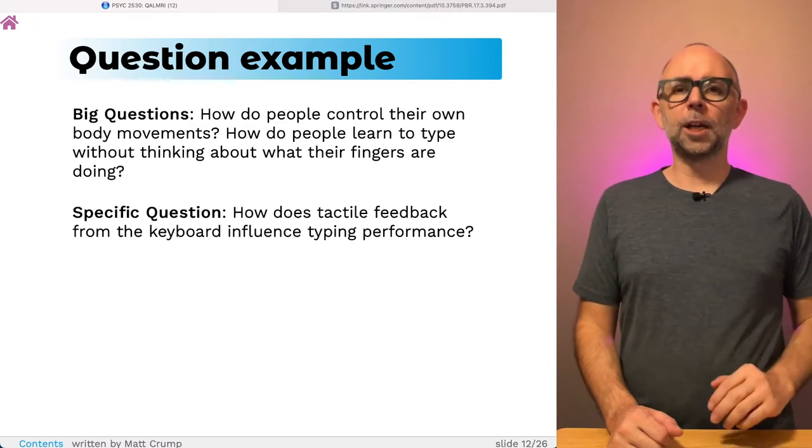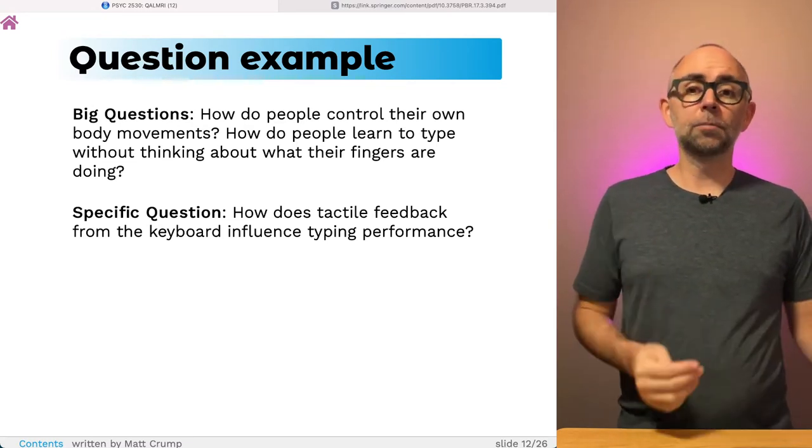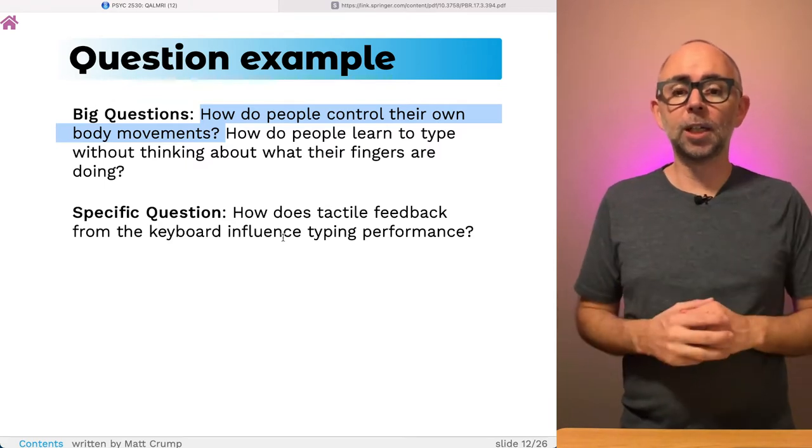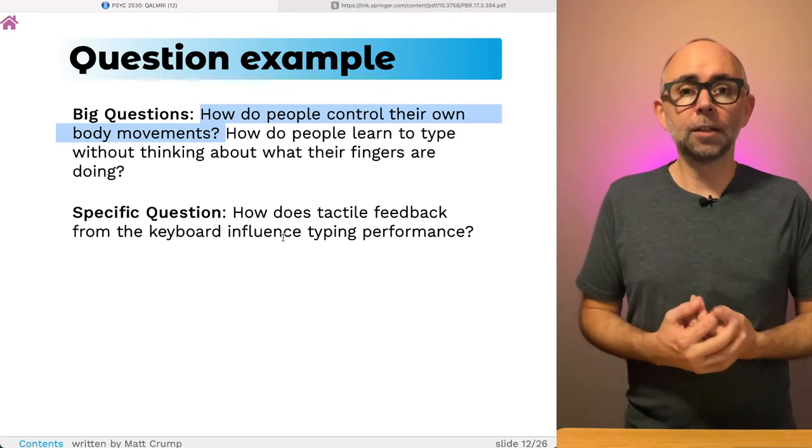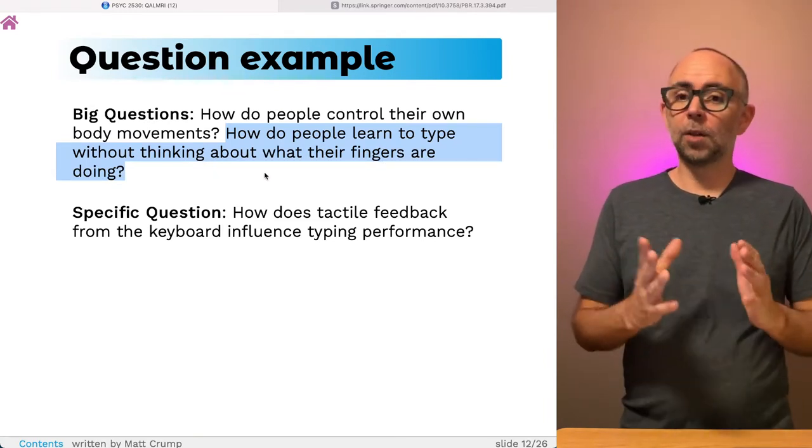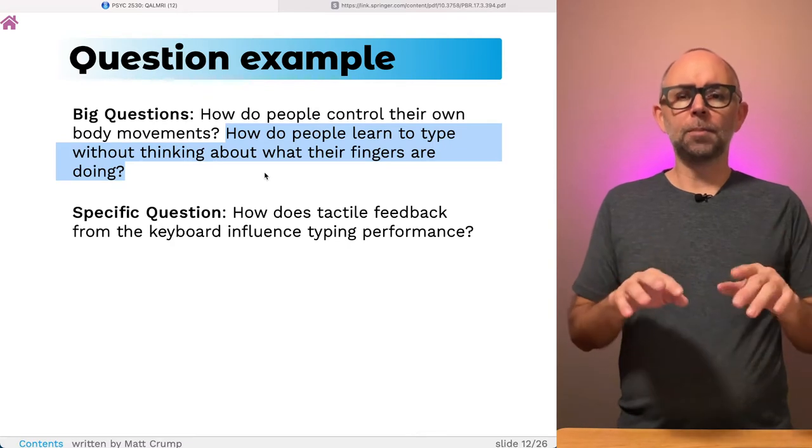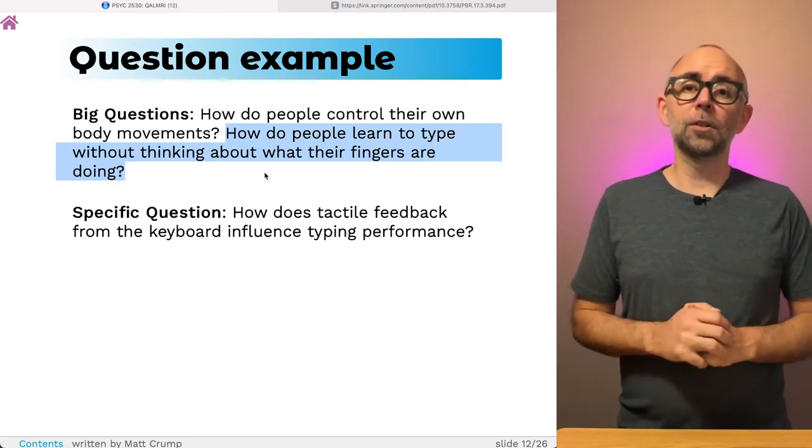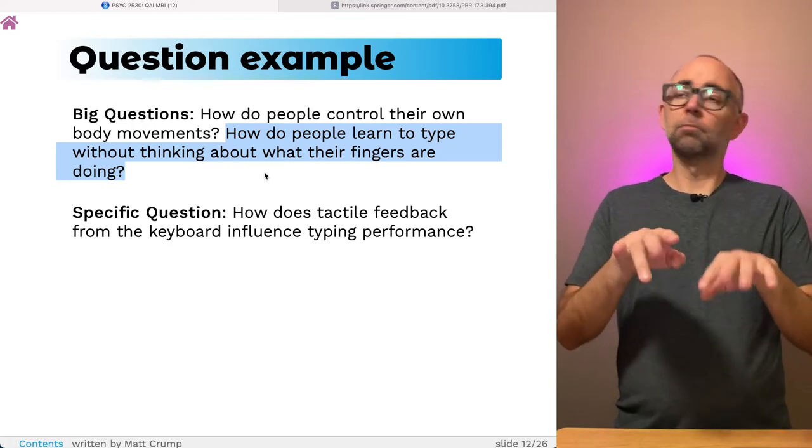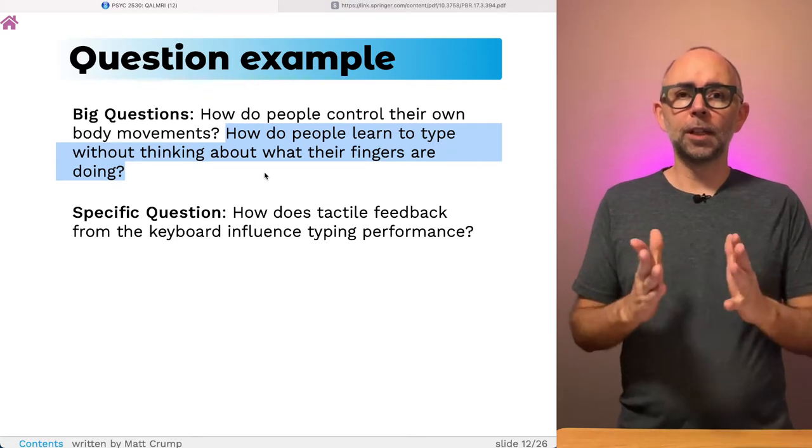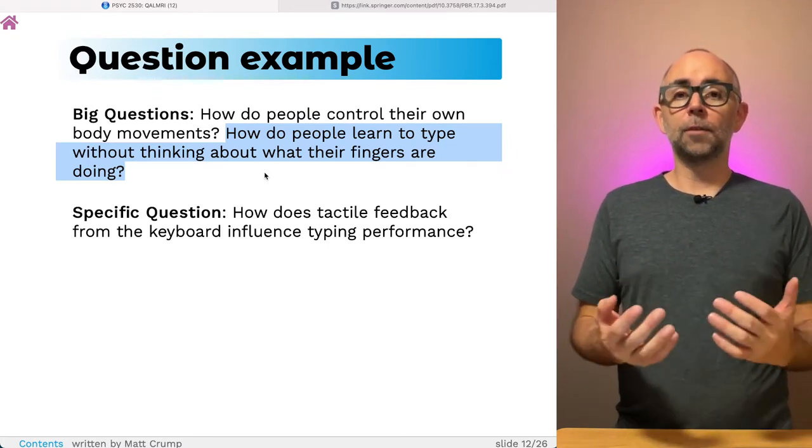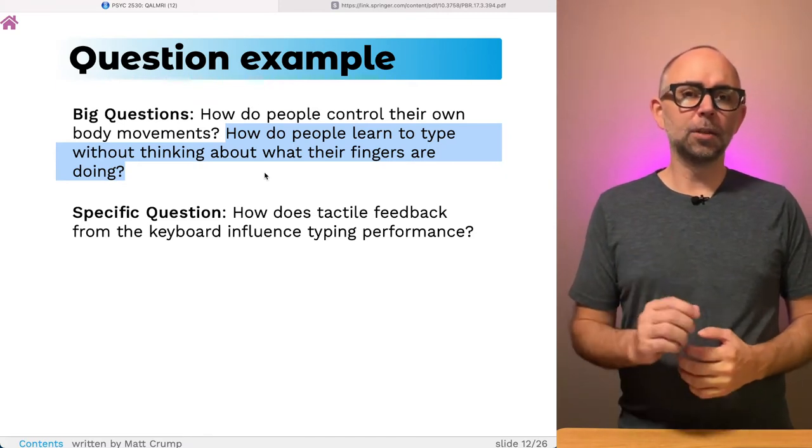This paper is about some big questions, and it's also about some very specific questions. Big questions usually take many experiments and papers to answer, and it's usually the case that an individual research article is, in addition to considering big questions, attempting to address or answer very specific, smaller questions that are the focus of that research. We're not going to jump into the paper and try to identify the components at this point, but I'll let you know that some of the big questions in that paper were, how do people control their own body movements? If you think about the ability to type on a keyboard, how is it they are able to move your hands in the first place?